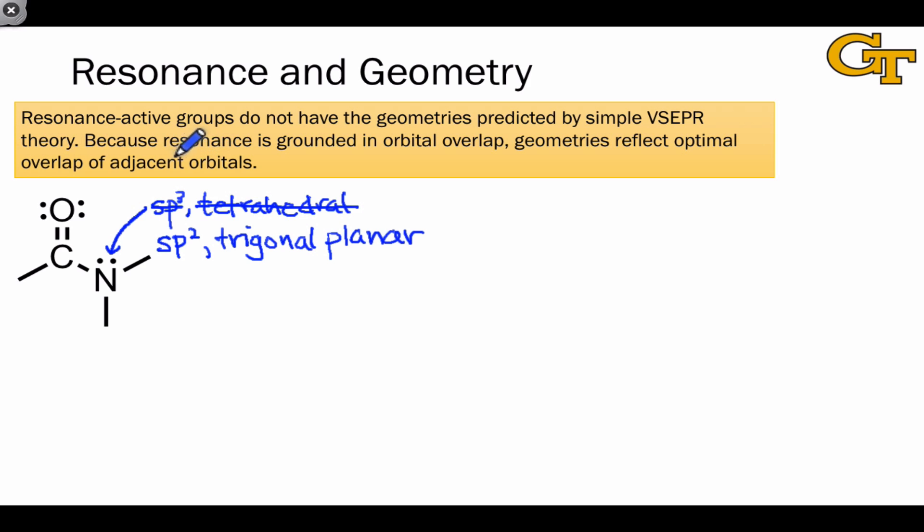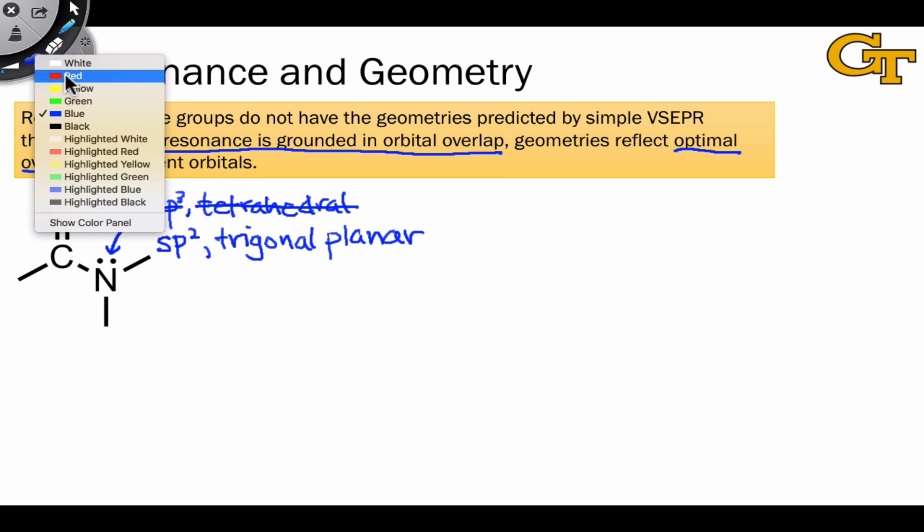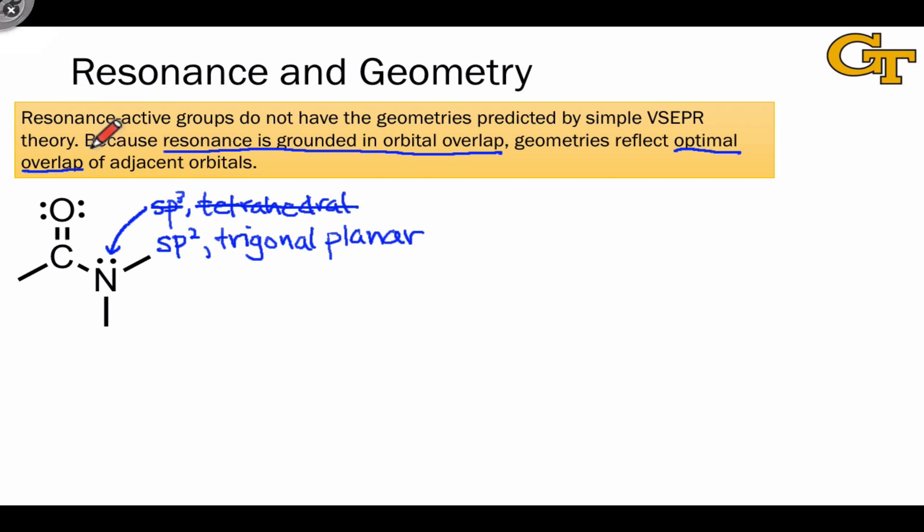The reason for this difference is that resonance is based on orbital overlap, and resonance active groups and molecules have geometric arrangements that reflect the optimal overlap of orbitals. We'll see what this means in a second, but for the time being, I just want to draw a resonance structure of this molecule that's going to help us understand why the geometry of nitrogen is trigonal planar rather than tetrahedral.